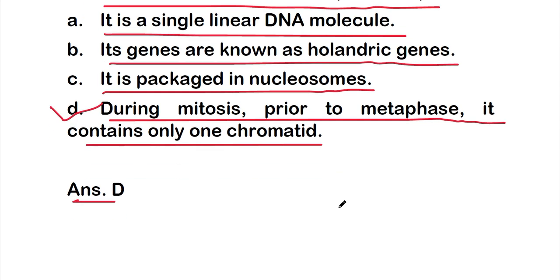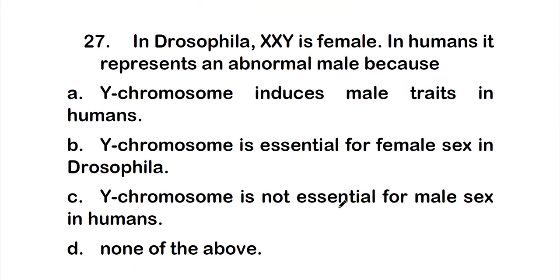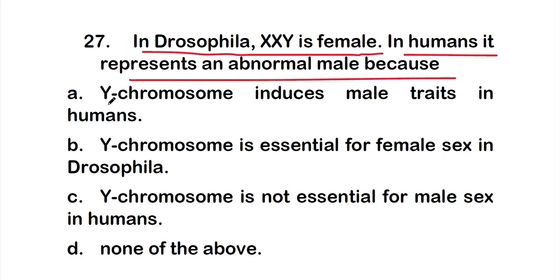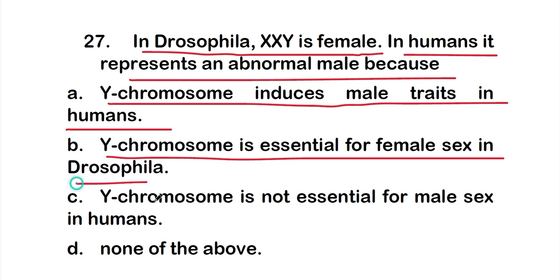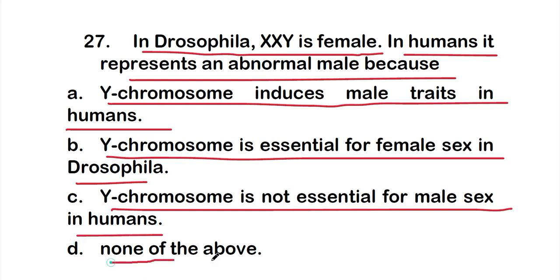Question 27: In Drosophila, XXY is female; in humans it represents an abnormal male because — option A: Y chromosome induces male traits in humans, option B: Y chromosome is essential for female sex in Drosophila, option C: Y chromosome is not essential for male sex in humans, or option D: none of the above. The right answer is option A — Y chromosome induces male traits in humans.